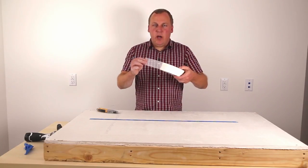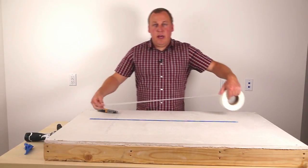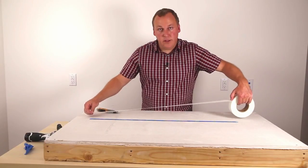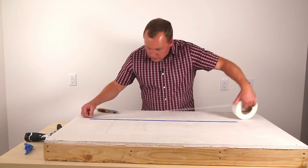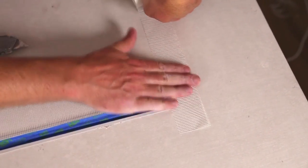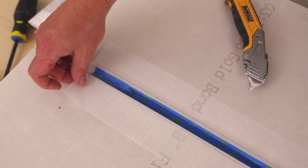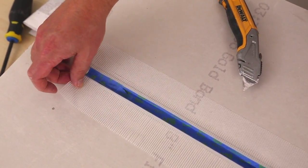Next, I'm going to take this mesh drywall tape and run it along the sides and the ends of the channel. Really important, it's good to get the edge of the mesh tape almost to where you have your blue tape. So you want to overlap that on top of the channel flange.